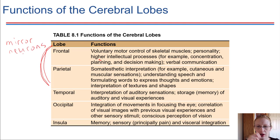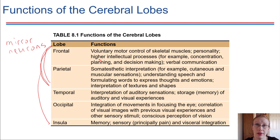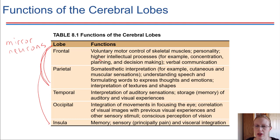Mirror neurons do a number of really important things. First, they allow integration of sensory and motor activity. They also have connections down to the insula and other regions of the brain, helping to tie emotional experiences with physical experiences. A lot of the social skills that we have are thought to be tied to the activity of mirror neurons — being able to understand what other people are going through and the emotions they might be experiencing. There is also research going on examining whether mirror neurons may be affected in cases of autism, where social skills are not quite developed in the same way as most of the population.